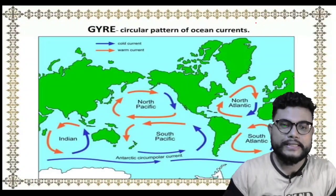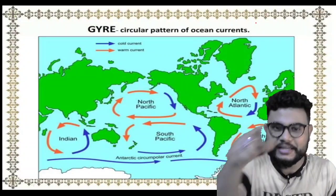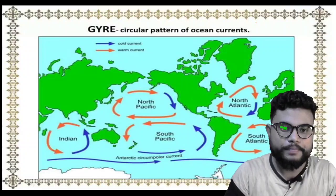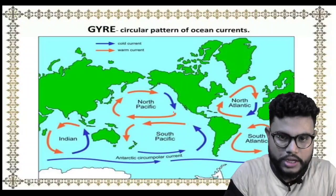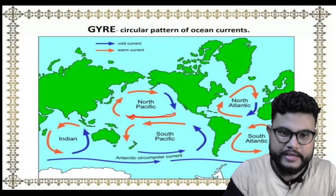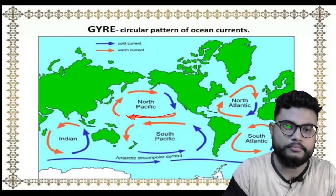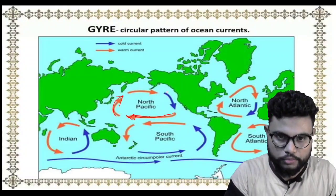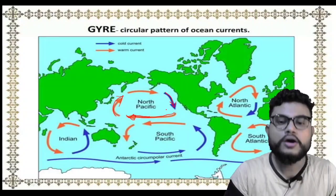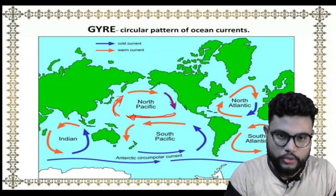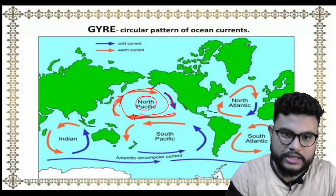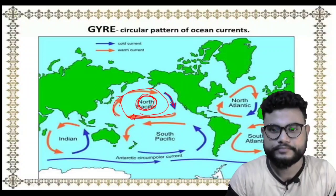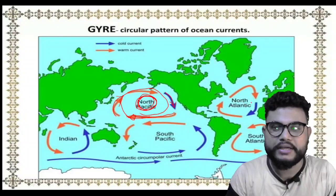These are gyres. A gyre is a circular formation — a complete circular circulation. The red color shown here represents warm current — meaning a source of warm water — and the blue color represents cold current. The circulation of warm current and cold current creates a space in the middle, which we call a gyre. In North Atlantic, a gyre forms which is called the Sargasso Sea.